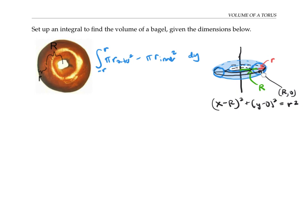But if my washer cross section is a little bit lower, it's not going to be all the way out to R + r. It's going to be a little less wide—just going to this x value on this curve. So I need to solve this equation for that x value.